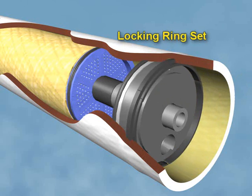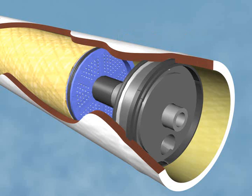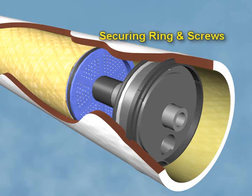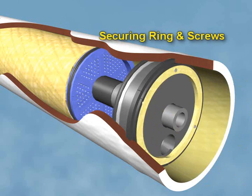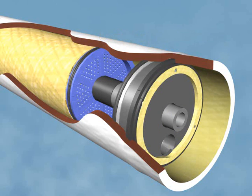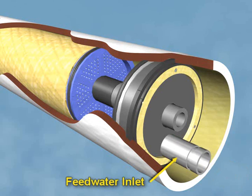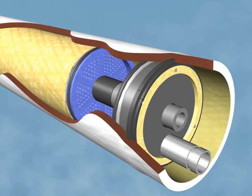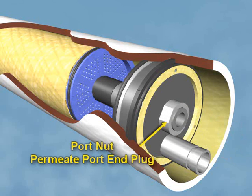A locking ring set that fits into a slot on the inside of the pressure vessel is used to hold these plates in place. A securing ring and screws are used to hold the locking ring set in place. The feed water port fits through the sealing plate to reach the cavity between the sealing plate and the first element. A port nut and permeate port end plug complete the inlet side assembly.